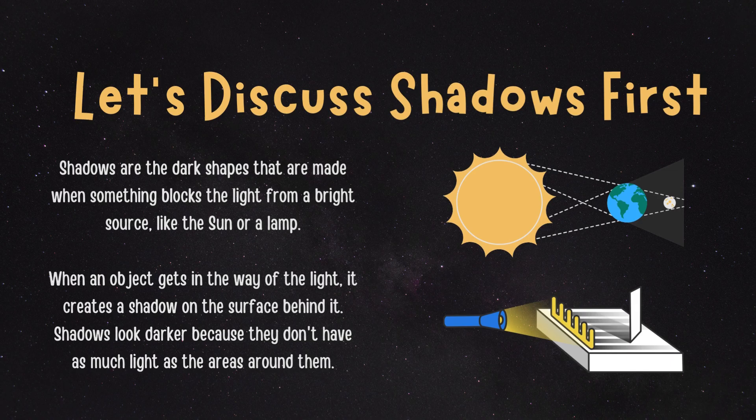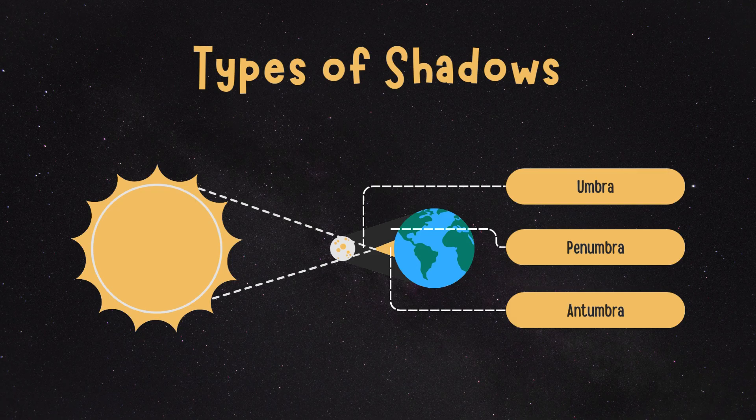When the moon eclipses the sun, it casts three types of shadows on earth: a smaller, darker shadow known as the umbra; a larger, lighter shadow known as the penumbra; and the third one is the antumbra, the extension of the moon's shadow beyond the umbra.